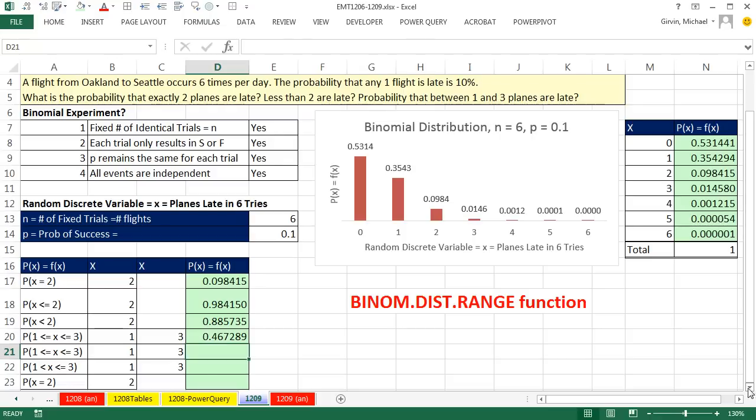In order to have a binomial experiment, you have to have a fixed number of trials. We do, there's six, that means six flights every day. Each trial only results in a success or failure. We're going to define success as late. And yes, every plane is either late or not late.